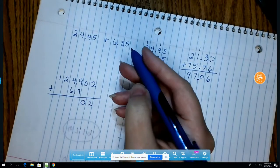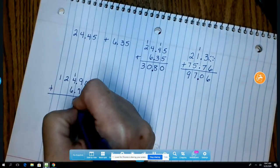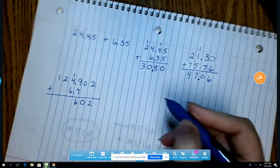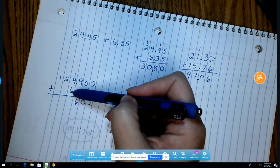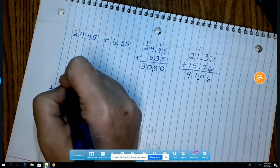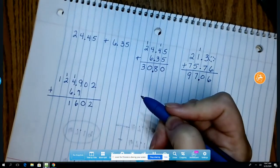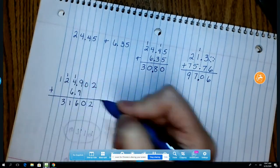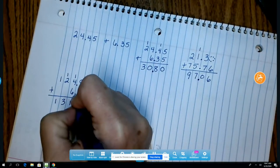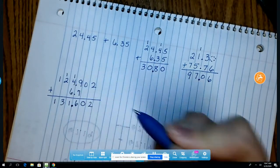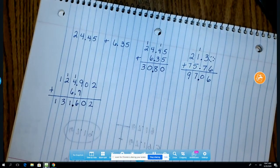9 plus 7 is 16. So 16. 1 plus 4 is 5 plus 6 more is 11. 1 plus 2 is 3. 1 plus 0 is 1. And then I bring my decimal down. And there is my answer. One hundred thirty-one and six hundred two thousandths. Hope this helps!